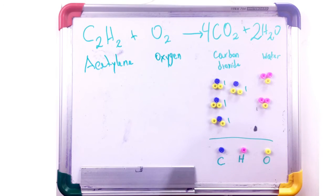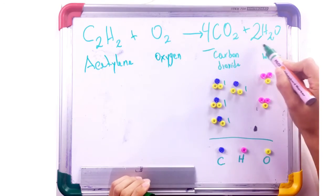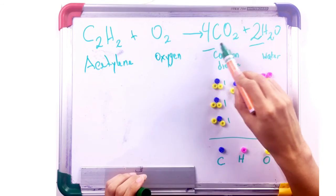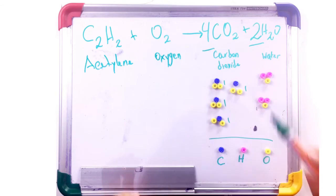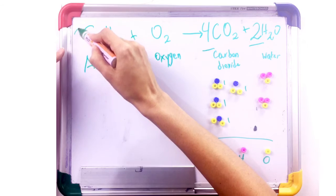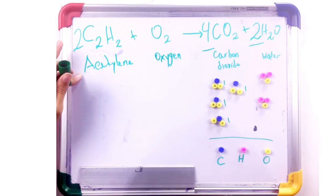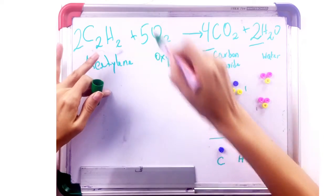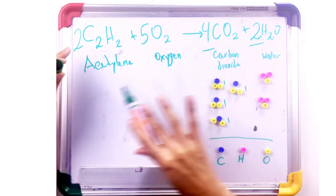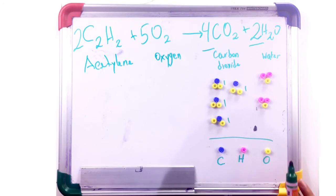Remember, we use coefficients, which are represented as numbers, in front of the compound that we're making to represent how many units we are making. We started with two acetylene and five oxygen atoms. This is now the complete unbalanced chemical equation.